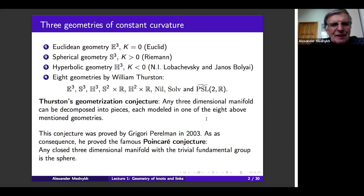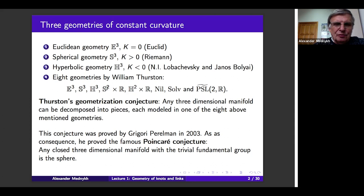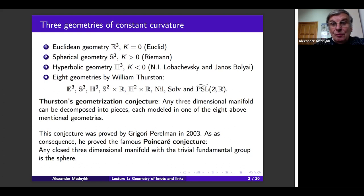Now I should also mention that in three-dimensional space there are indeed eight geometries — the so-called eight geometries by William Thurston. Three of them are already mentioned. Two more can be reconstructed more or less easily: for example, the direct product of the two-dimensional sphere with the real line, and the direct product of the hyperbolic plane with the real line. There are also three so-called exotic geometries: Nil, Sol, and the universal covering of the matrix group formed by 2×2 matrices with real coefficients. My subjects will be just the geometries with constant curvature.